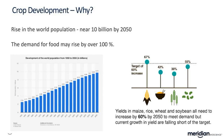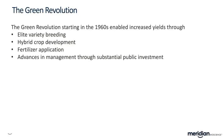We did actually see this coming. Some of you may remember the Green Revolution of the 1960s, which enabled us to start looking at elite variety breeding, hybrid crop development, fertilizer application, and advances in management through quite substantial public investment. As a consequence, food security has really benefited in many regions of the world, particularly in places like India and Southeast Asia, where poverty and malnutrition has really dropped. There have been consequences though — increased yield is a positive, weed and pest control a big positive — but costs for the farmer increased and there's been possible environmental degradation.